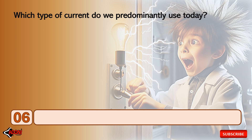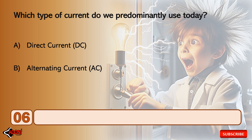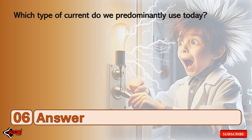Which type of current do we predominantly use today? Direct current, DC? Alternating current, AC? Or static current? The answer is alternating current, AC.